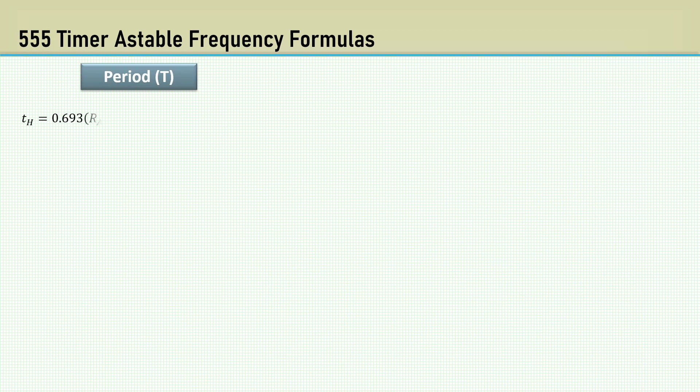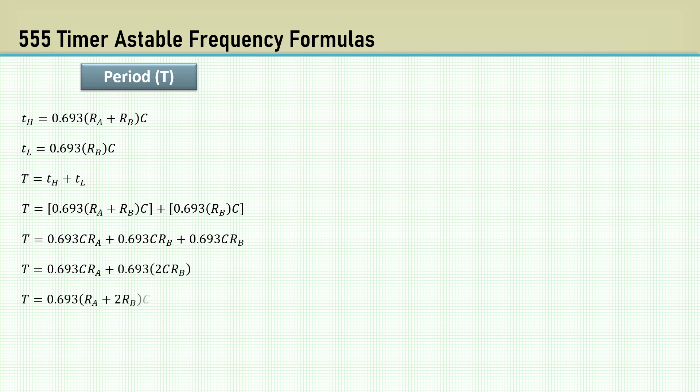Let's review the formulas for the 555 timer in astable mode. The time the output is high uses this formula since the charging happens with RA and RB in series. The time the output is low is just the discharge time through RB. By the way, the difference in time between discharging between any two voltages is the same as the charge time between the same two voltages. Therefore, we don't need to involve the discharge formulas. The period time, capital T, is the sum of the high time and the low time, resulting in that formula we have seen in the databooks.